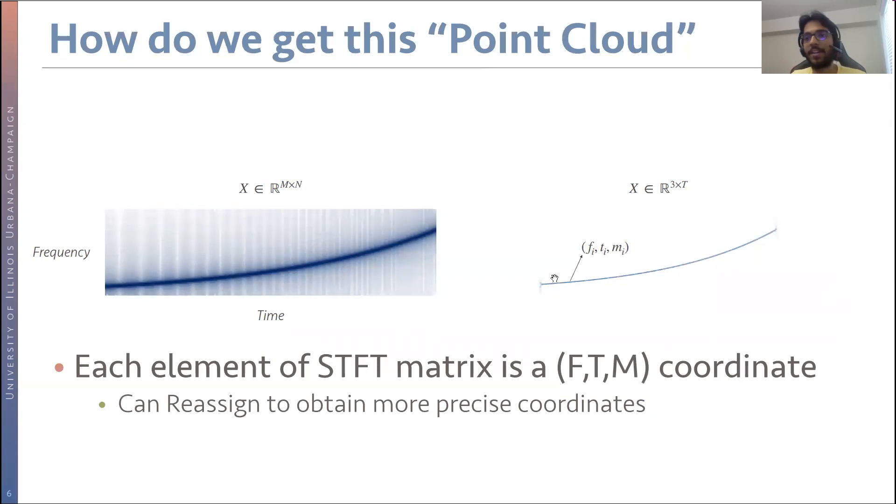We can start off with the spectrogram. What we have is a time-frequency representation, which is commonly represented as a matrix, an R-MN matrix. Each element is essentially a time-frequency magnitude coordinate. We can collect all of those into a set X, where each element is just three coordinates: the frequency-time-magnitude, and there are t-such points. This set of three-dimensional tuples is our input to the models we work with ahead. More generally, you could do stuff like reassignment to obtain more accurate coordinates of these locations.